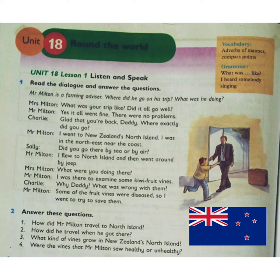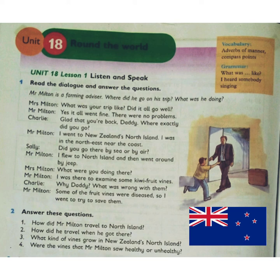Now you know that Mr. Milton is a farming advisor, Mrs. Milton is his wife, Charlie is his son, and Sally is his daughter. In this lecture you also learned how Mr. Milton traveled to North Island — he flew there. Once he arrived, he used a jeep to move around. Kiwi fruit vines grew there, and those vines were not healthy — they were diseased — which is why he was there to give consultancy advice.